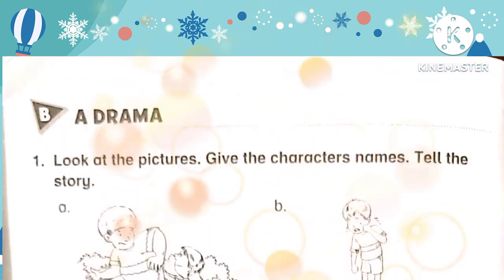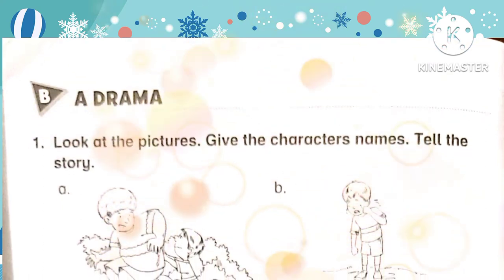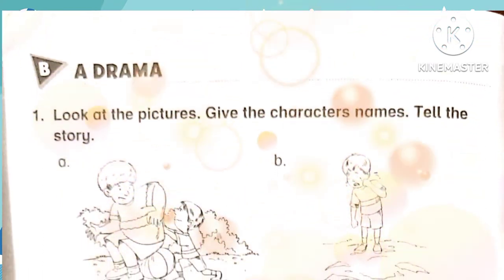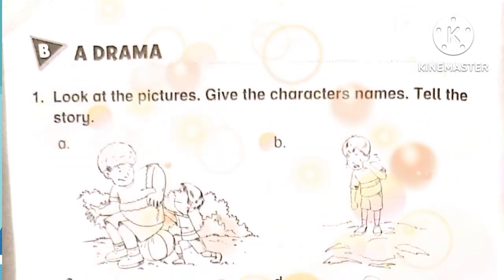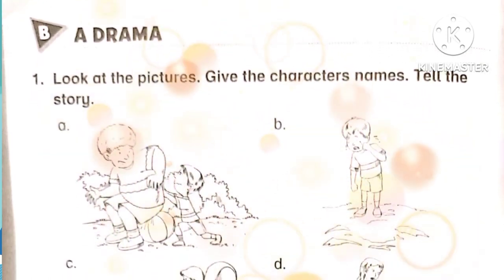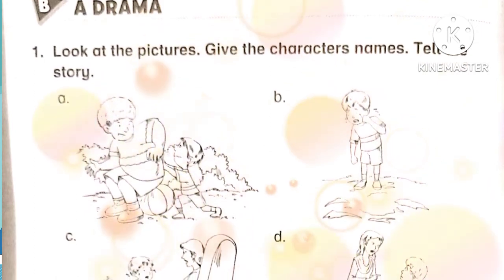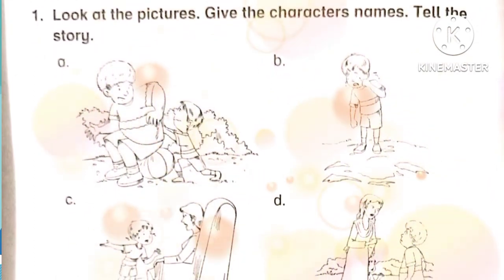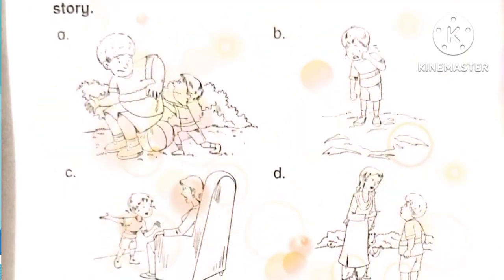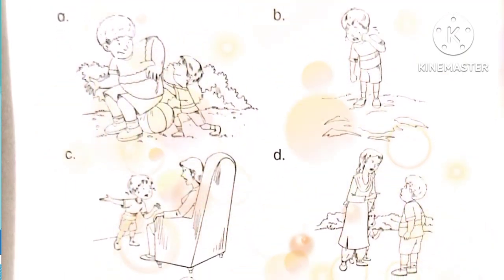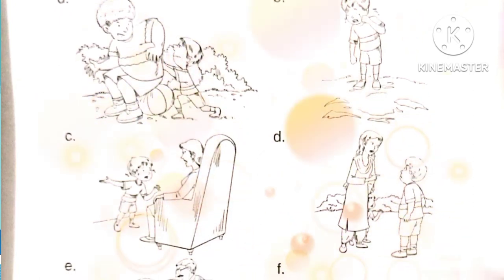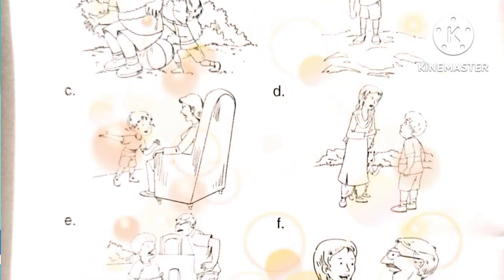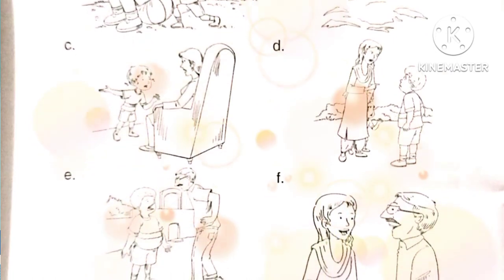The next section of the exercise is Section B — Drama. Question number one: look at the pictures given. Give the characters names and tell the story. We have almost eight pictures here and four characters. We have to name them, and in every picture we have to create a sentence to tell the story. We can call it a drama because that is the name of the section.